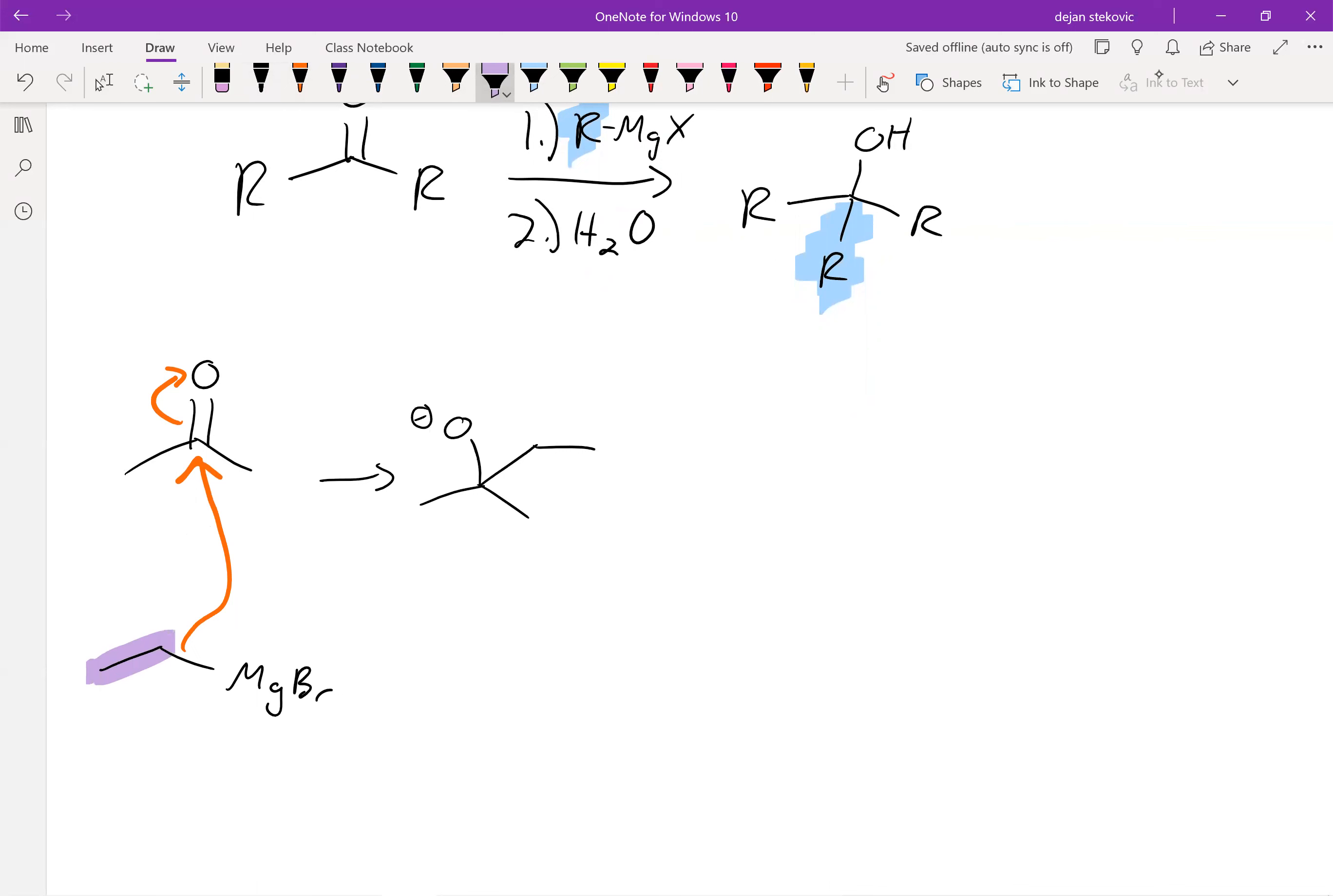And what you can see is now we've added our alkyl chain. Make sure that you're adding the correct number of carbons. In this case, we have an ethyl Grignard reagent, so we add an ethyl group here. And then in the second step, we simply just reprotonate our alcohol.